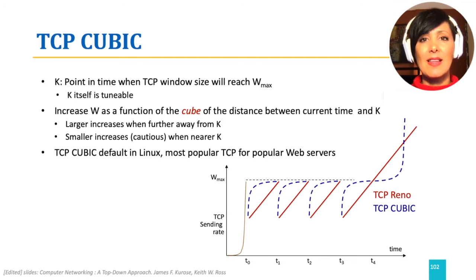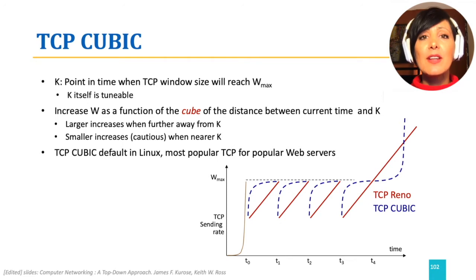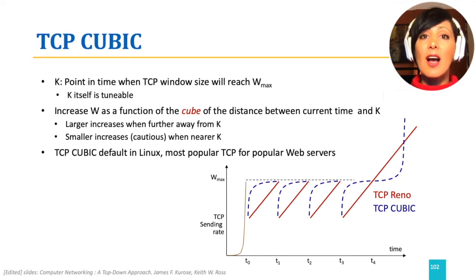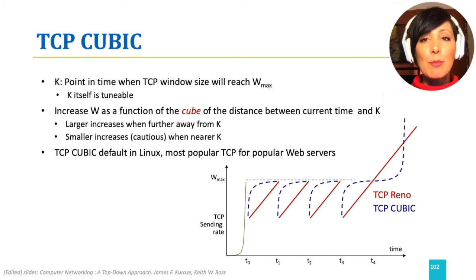Note that this might have a different effect when congestion conditions in the network change. For example, what happened after point T3 in the figure, where the congestion seems to be substantially alleviated in the network? This allows higher values of the congestion window size compared to what was previously expected. Therefore, the tuning of the value K has an important role in TCP Cubic's performance.